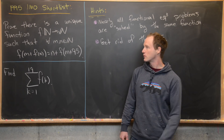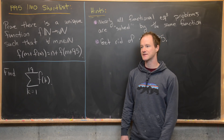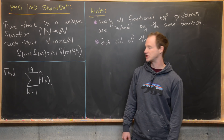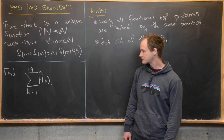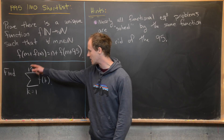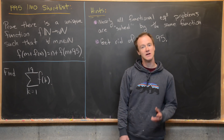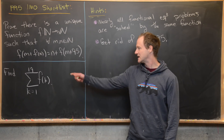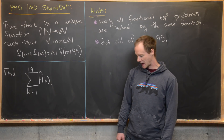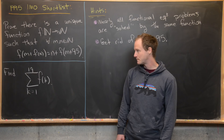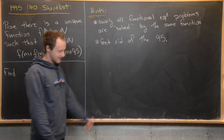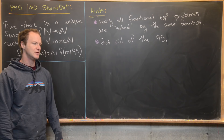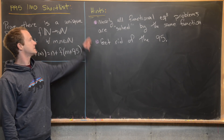After we prove that there is a unique function satisfying this — and along the way we'll find out what that function is — we want to evaluate the following finite sum: the sum as k goes from 1 to 19 of f evaluated at k. I've got some hints provided if you want to try this before we look at the solution.